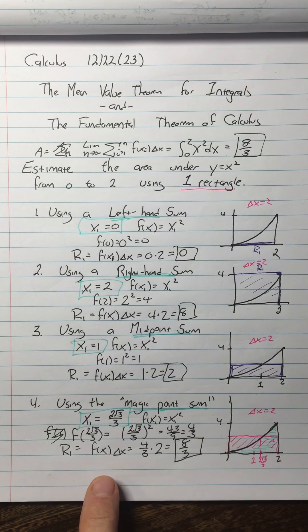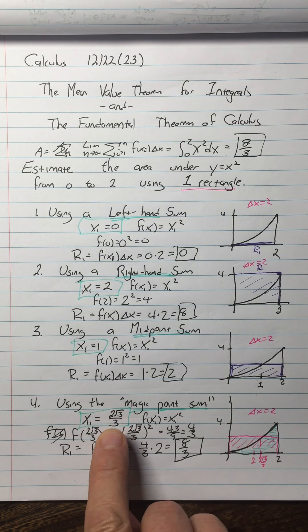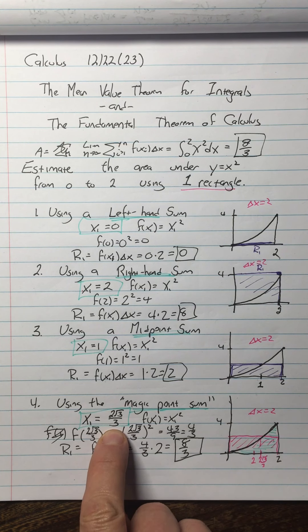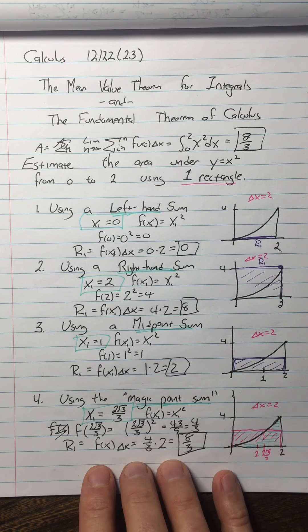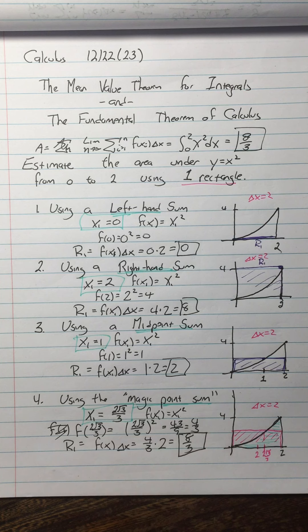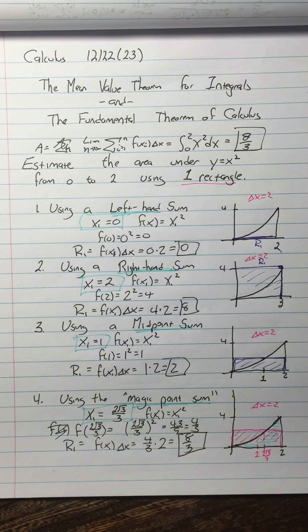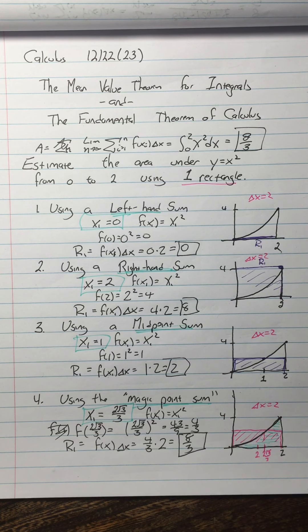I started with the fact that I knew the area was 8 thirds, and I back solved it to get that the x sub i had to be 2 square root 3 over 3. But I could not have gotten what the x1 was if I didn't already know the area. Therefore, this process just by itself doesn't help us. However, it turns out to be an integral step in what's to come.